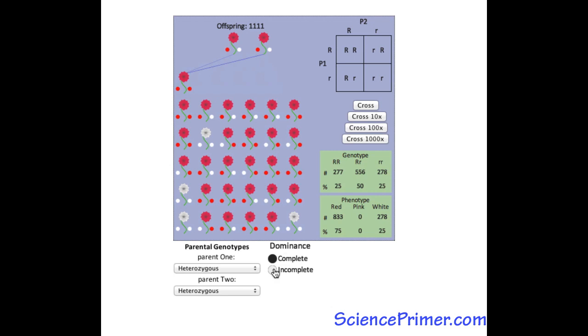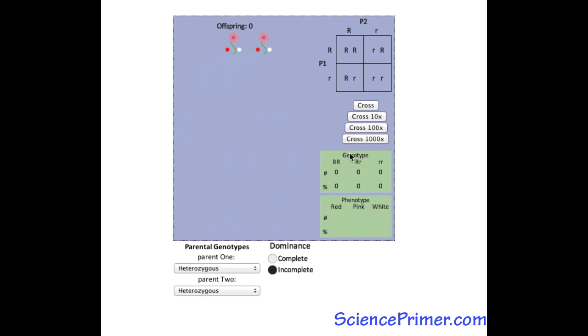Any changes made to the parental genotypes or pattern of dominance clears the offspring and resets the tables. Let's see.